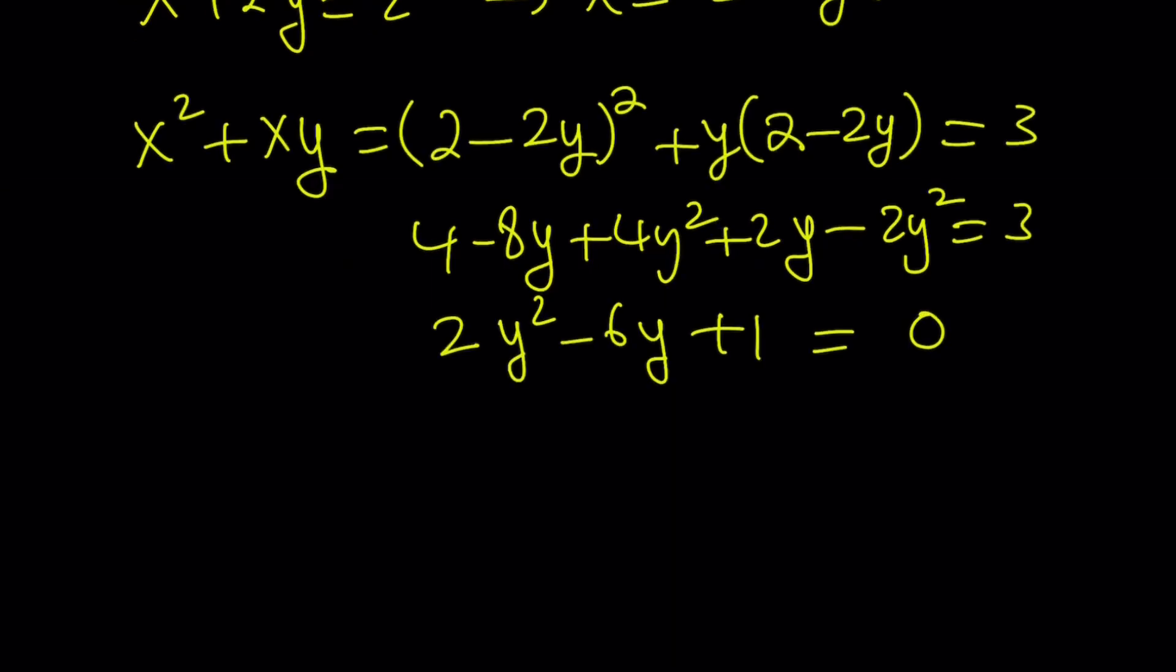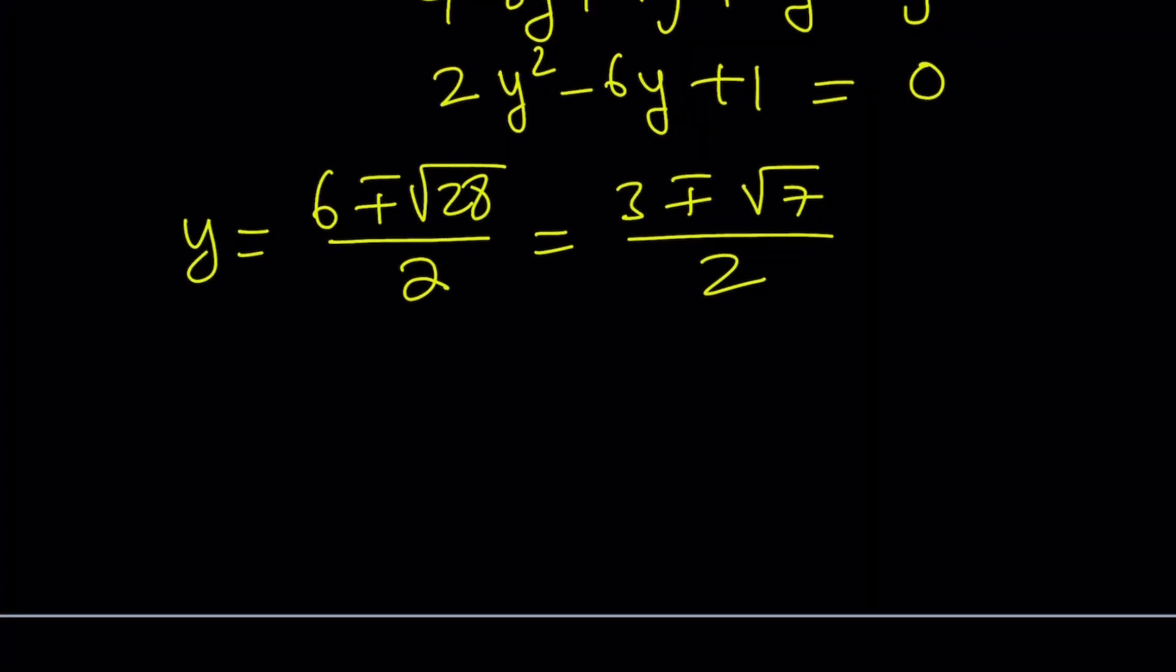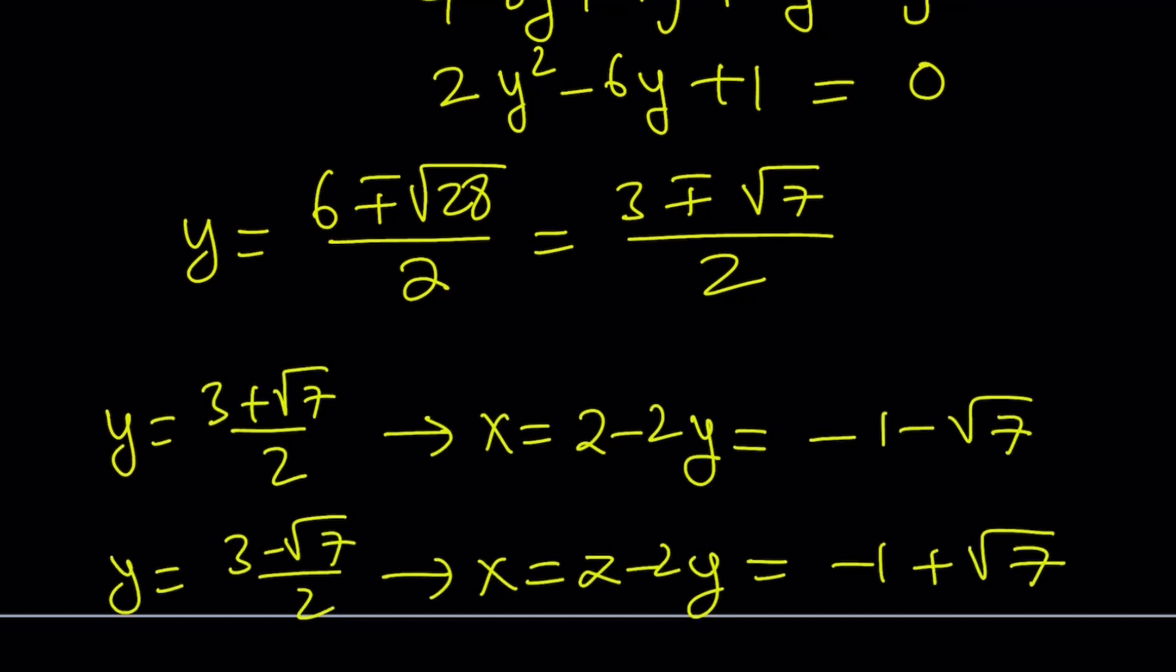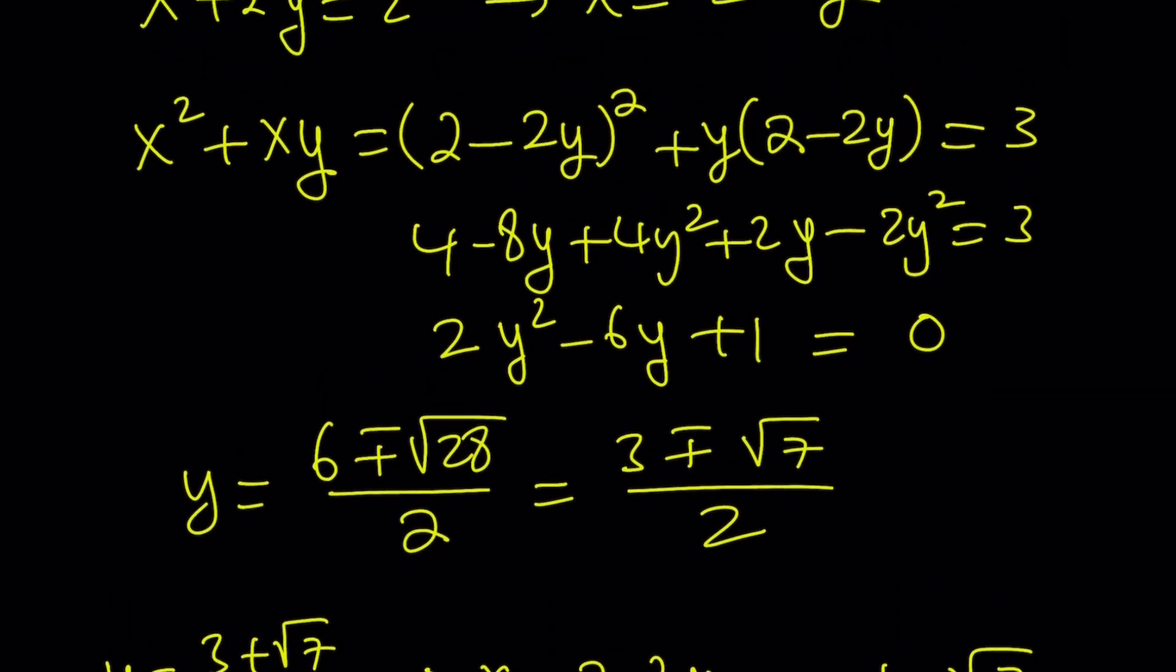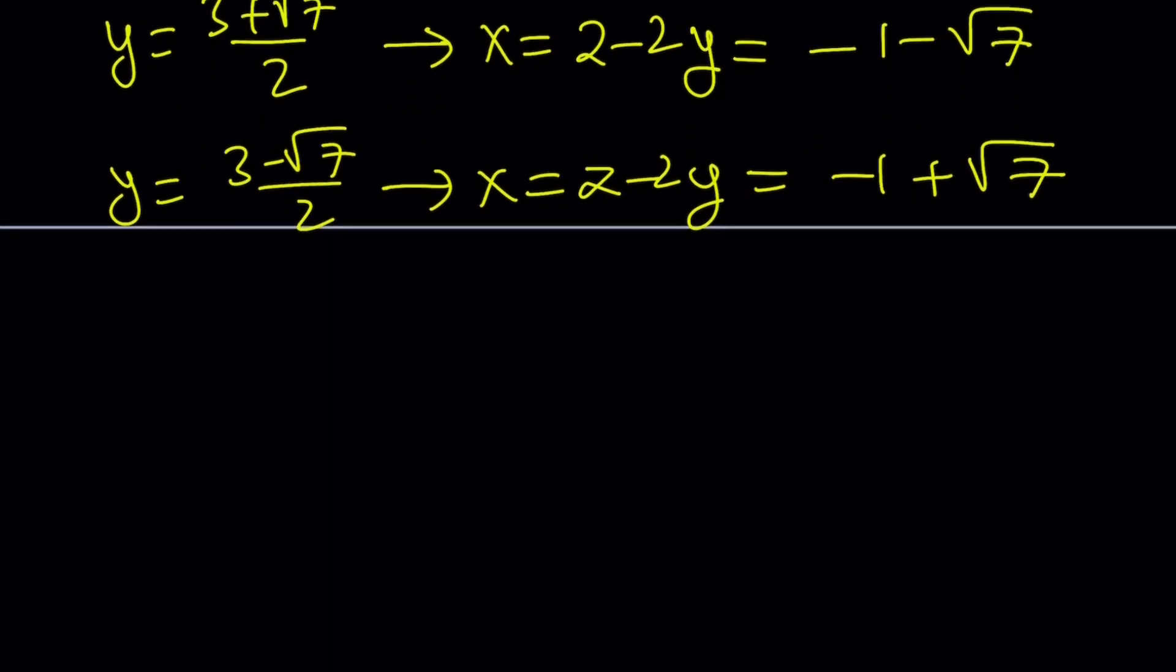And we're going to get this quadratic equation. And then find the solutions by using the quadratic formula. These are the y values. Let's go ahead and plug them in to find the x values. And these are going to be the x values for the first set, which is x equals 2 minus 2y. Now let's do the same thing for the other solution.